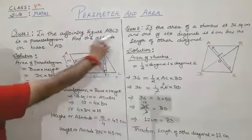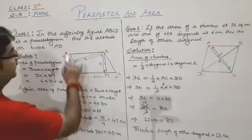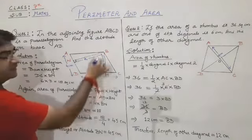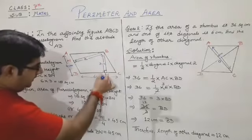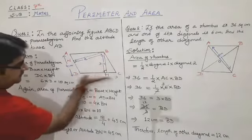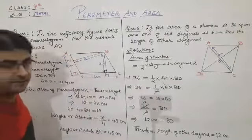In the adjoining figure ABCD is a parallelogram. Find the altitude on base AD. We are given ABCD is a parallelogram and BM is the altitude, that is the height of the parallelogram. The base corresponding to this height BM is DC, which is given as 6 centimeters, and BM is 3 centimeters.